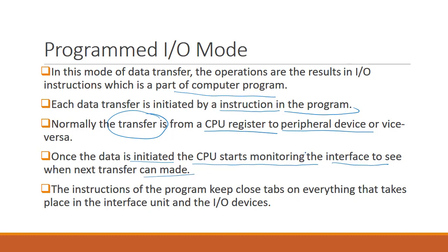This is the most important part of the programmed input-output mode: during the data transfer, the CPU continuously monitors the data transfer between the CPU registers and peripheral devices. The instructions of the program keep close tabs on everything that takes place between the interface unit and the input-output device. In programmed input-output mode, the CPU is busy monitoring the data transfer, and when the data transfer occurs, the CPU can do nothing. So here there is a waste of CPU time.